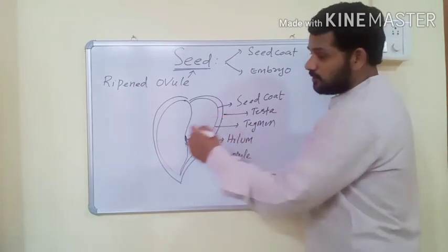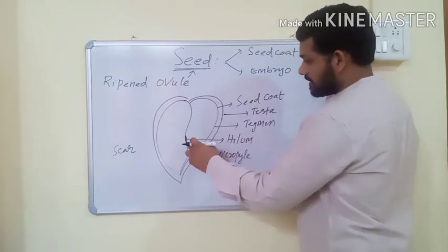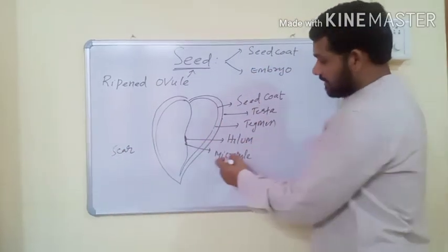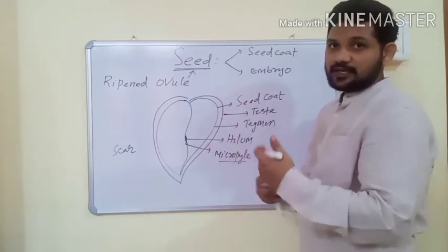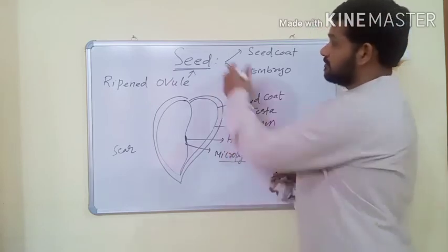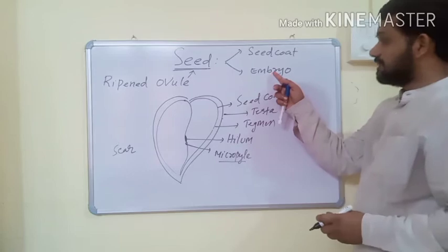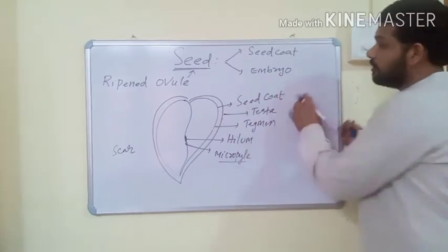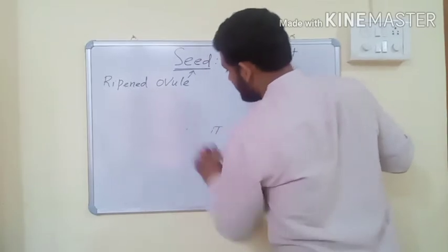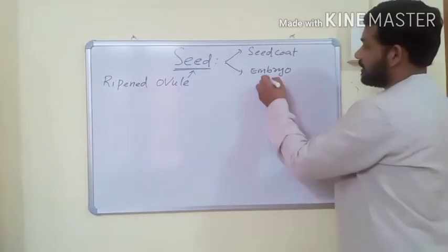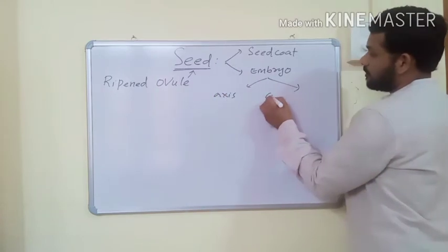The second part of the seed is the embryo. The embryo has an embryonal axis and cotyledons. The cotyledons store the reserve food material. The axis of the embryo is known as tigellum or embryonal axis.